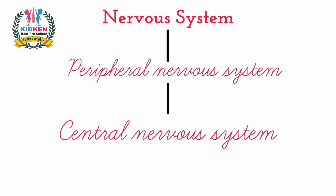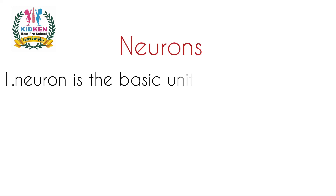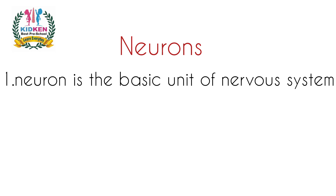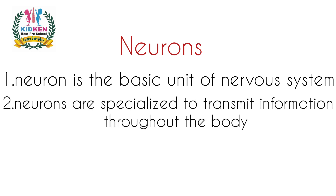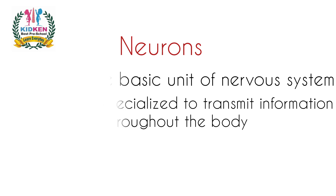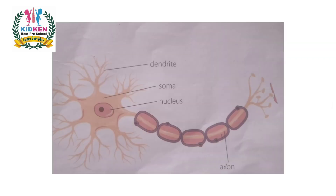Let us first study the nerve cell and understand the neurons. A neuron is the basic unit of the nervous system. Neurons are specialized to transmit information throughout the body. You will see a neuron structure here. There are four parts: dendrite, soma, nucleus, and axon.